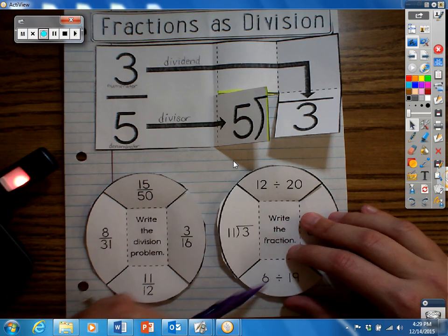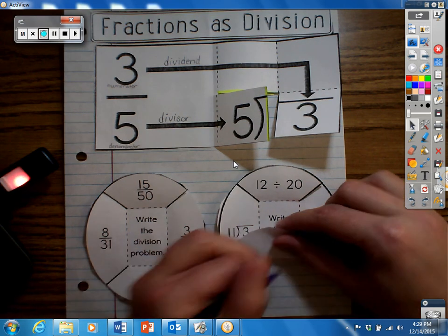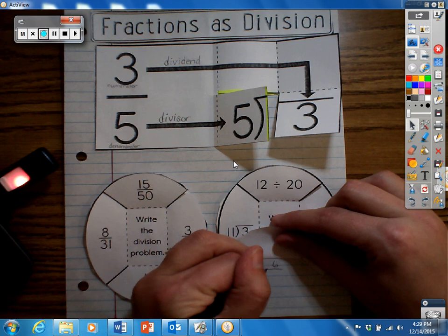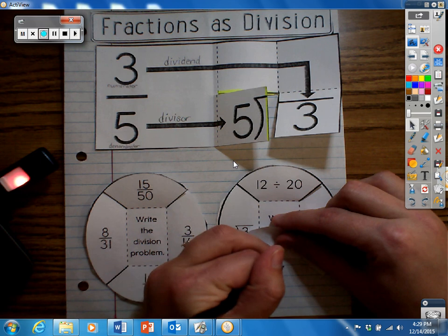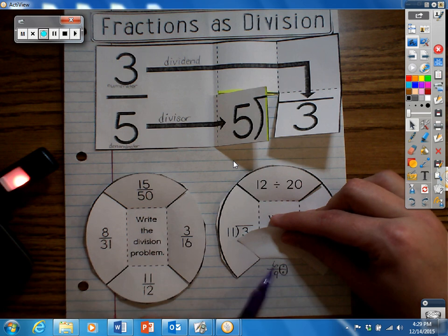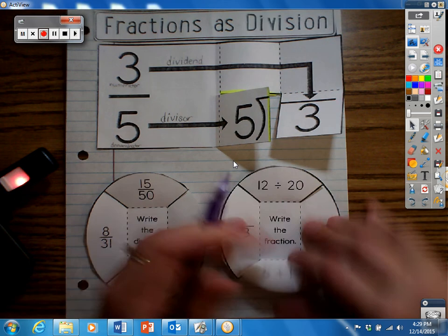Now 6 divided by 19, we can write that as a fraction just like so. And if we remember from our previous station, 6, and then we can use that fractional line as a division sign, 19.